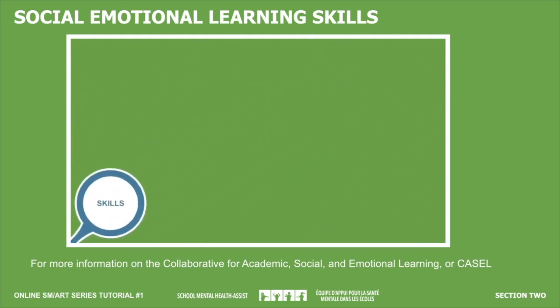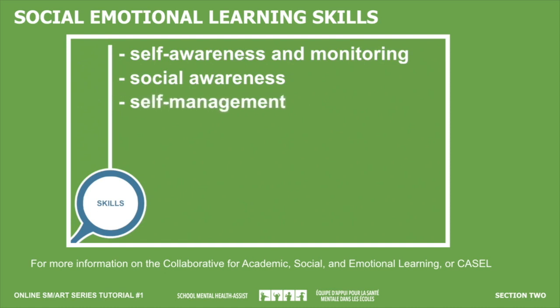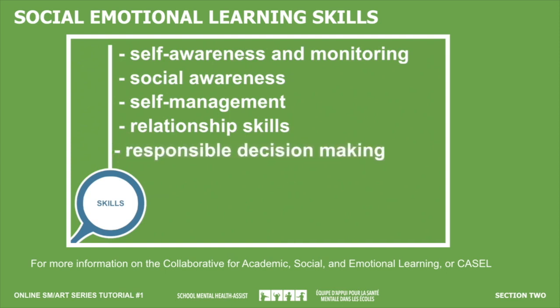Social-emotional learning skills help us to navigate through life socially and academically. The Collaborative for Academic, Social, and Emotional Learning, or CASEL, has identified five interrelated sets of competencies: self-awareness — knowing what we are feeling and having a realistic assessment of our abilities; social awareness — understanding what others are feeling and taking their perspective; self-management — handling our emotions so they facilitate rather than interfere with the task at hand; relationship skills — establishing and maintaining healthy relationships; and responsible decision-making — making decisions based on accurate consideration of relevant factors. Research indicates that teaching SEL skills in a sequential, active, focused, and explicit manner not only leads to improvements in student attitudes and behaviors, but also enhances academic performance by a significant degree.